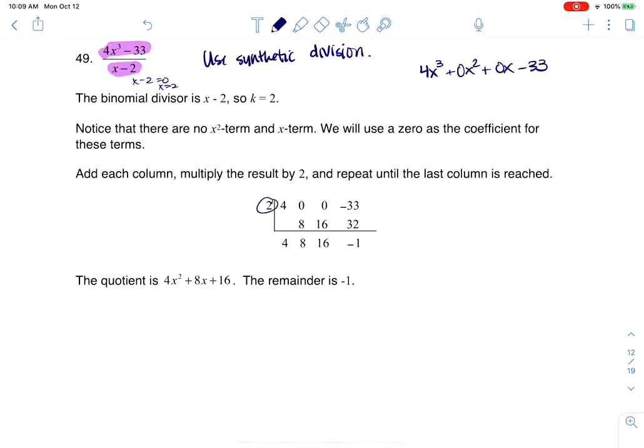So I put 2 there, I put my coefficients, and then it's time to do synthetic division. Bring the 4 down. 2 times 4 is 8. 0 plus 8 is 8. 2 times 8 is 16. 0 plus 16 is 16. 2 times 16 is 32, and negative 33 plus 32 is negative 1. So my remainder here is negative 1, and we can see my quotient.